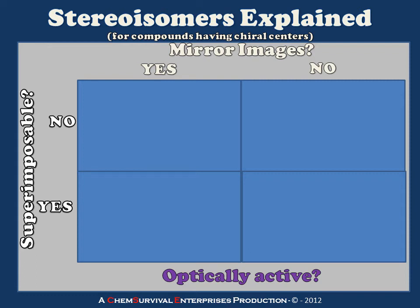This is the second installment of our Stereoisomers Explained lecture. I'd like to begin by reviewing what we talked about in the first series — comparing the different properties of compounds and how they translate into them being either enantiomers, diastereomers, meso compounds, or identical compounds.